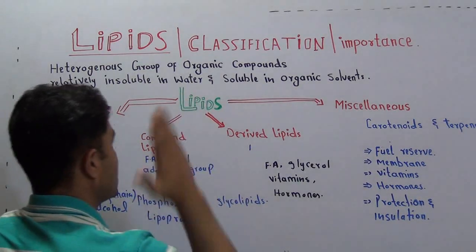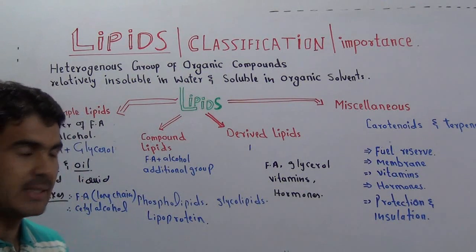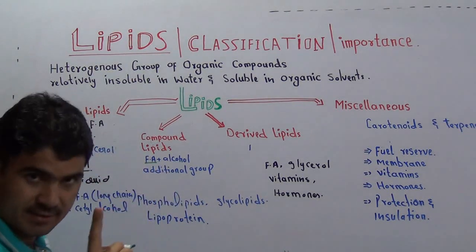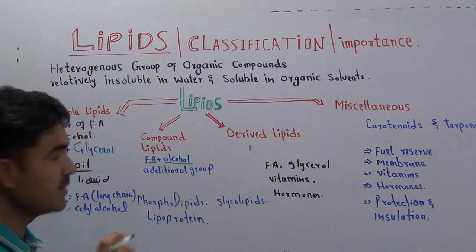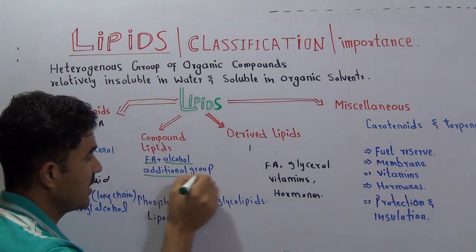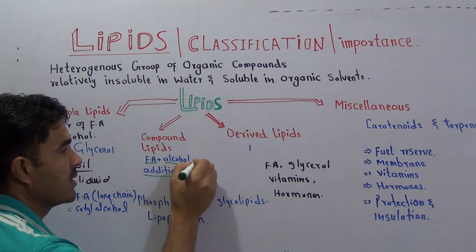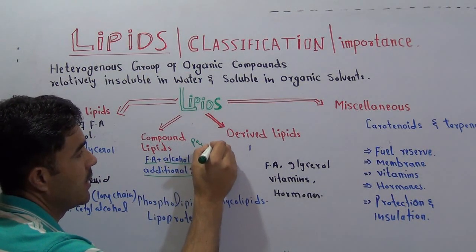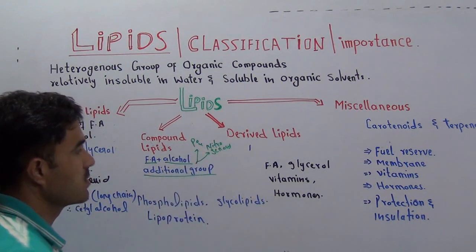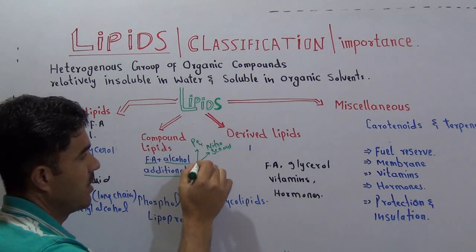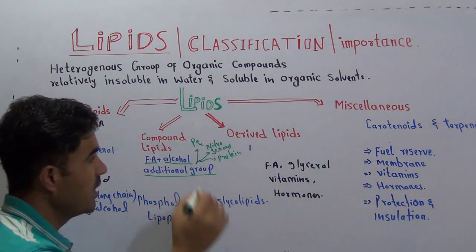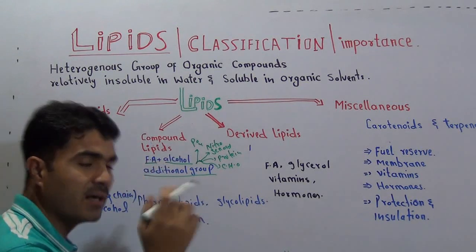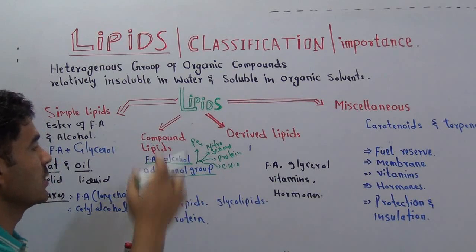Now, come to the second category — compound lipids. A compound lipid contains fatty acid and alcohol, just like simple lipids. But there is an additional group attached. This additional group may be a phosphate group, a nitrogenous group, some kind of protein, or a carbohydrate (CHO). When these two components are already present and a third substance as an additional group is also attached, we call them compound lipids.